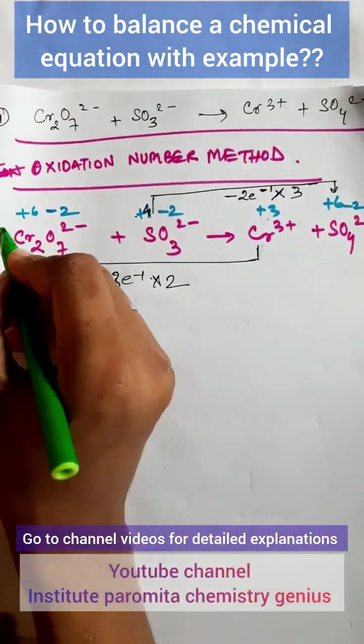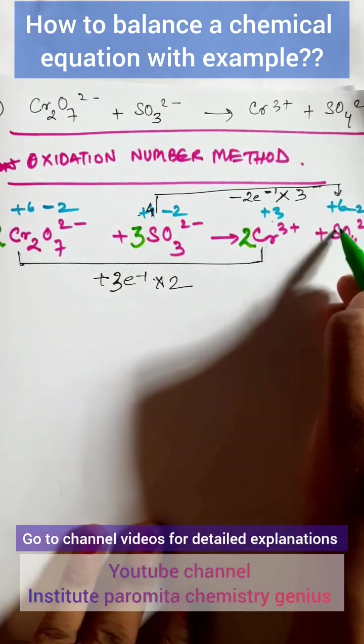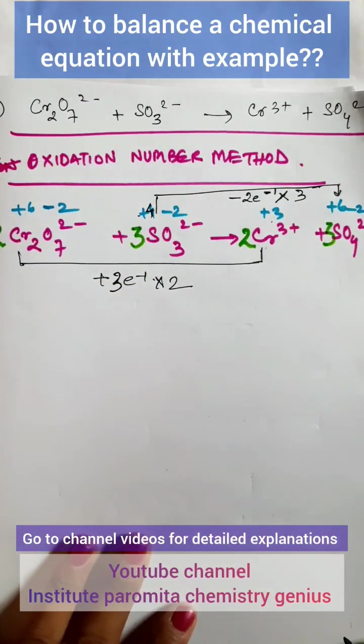So that what happens, chromium will be 2 out here, this also will be 2 out here, and if it is multiplied by 3, so this will be 3 and here also it will be 3. Now we will balance